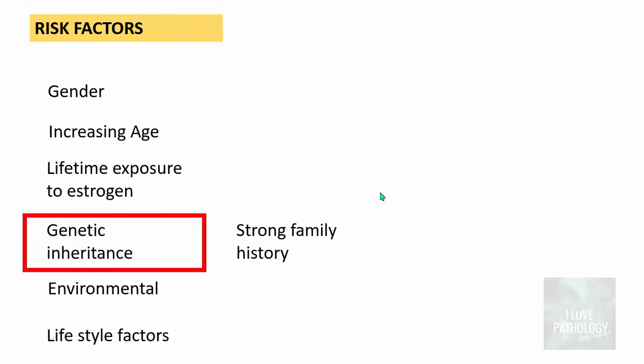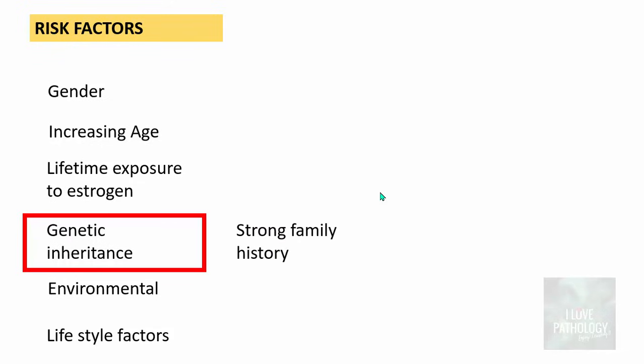The next risk factor is genetic inheritance. A strong family history — particularly a first-degree relative who has had breast cancer, families with breast cancer at relatively younger ages, or multiple cancers in those families — is a very strong determinant. Having a strong family history, especially in a mother, sibling, or aunt, is an independent risk factor.